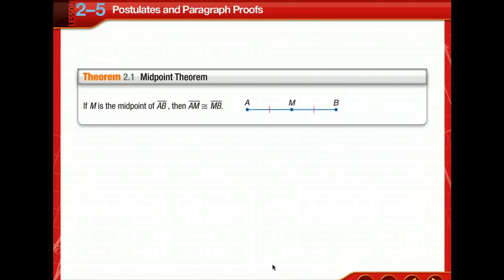We have now proven our midpoint theorem, so we can use it in other proofs. We had a conjecture, we proved it, and now we can use it — that's how mathematics is formulated. Make sure in your notes you have sections for postulates, properties, definitions, and theorems. Go back to your textbook: page 27 for segment midpoint, page 46 for definitions of special angle pairs, page 47 for definitions of angle pair relationships, and page 48 for the definition of perpendicular lines. Those will be very important in this chapter and in future chapters.